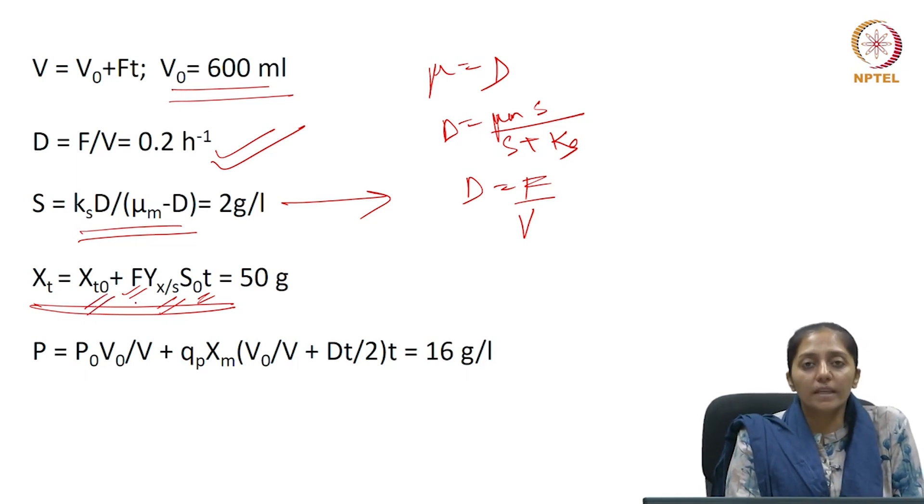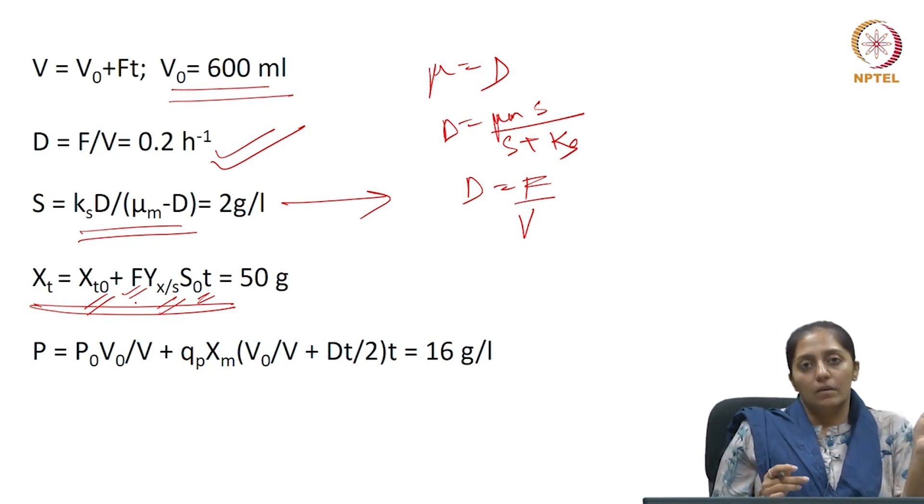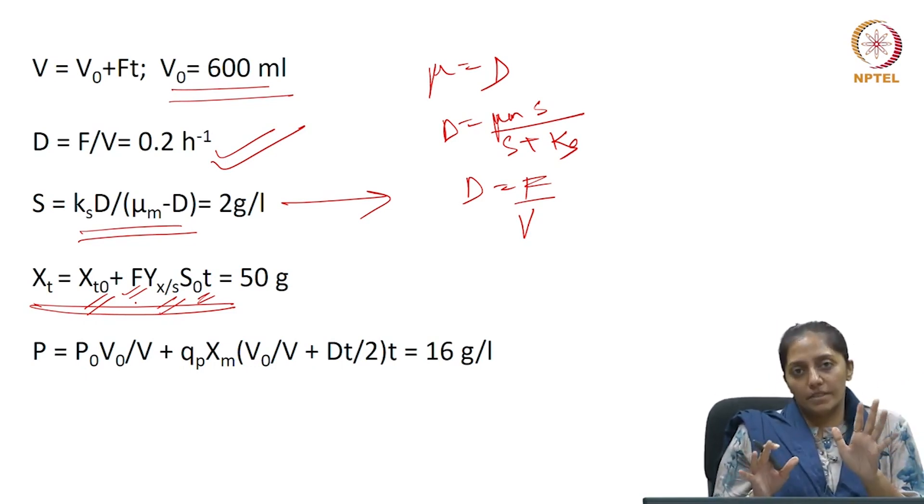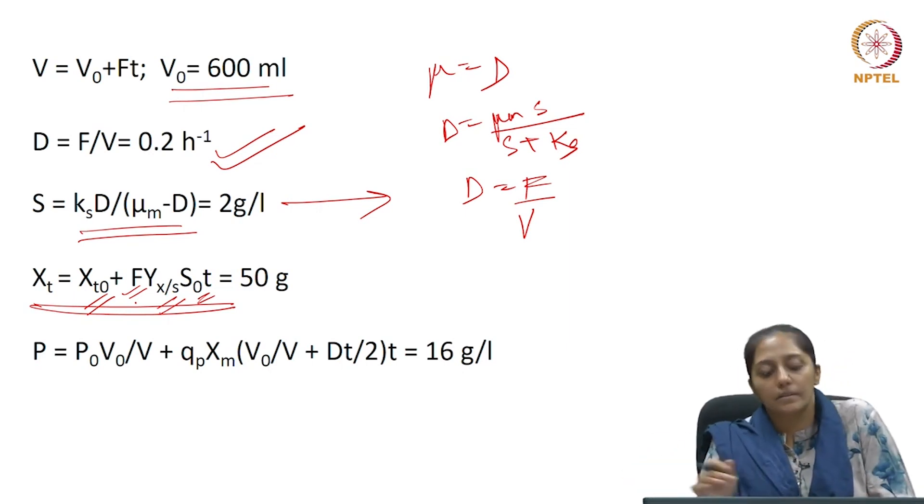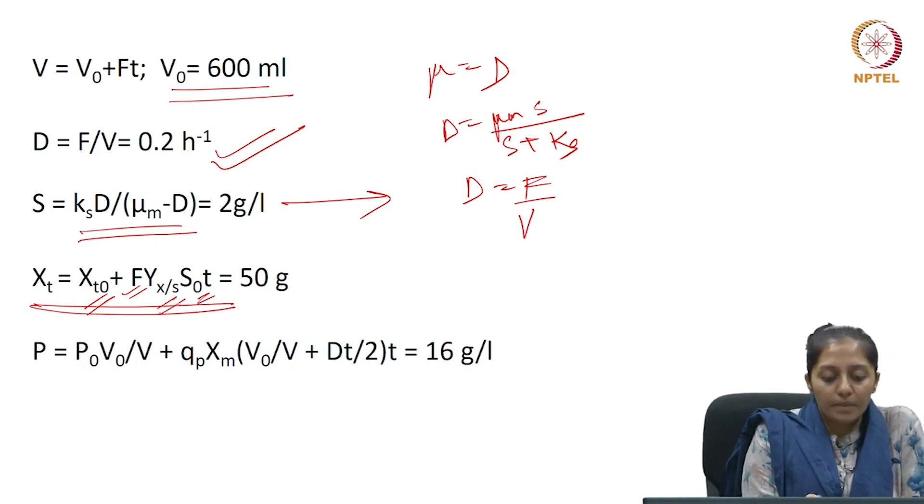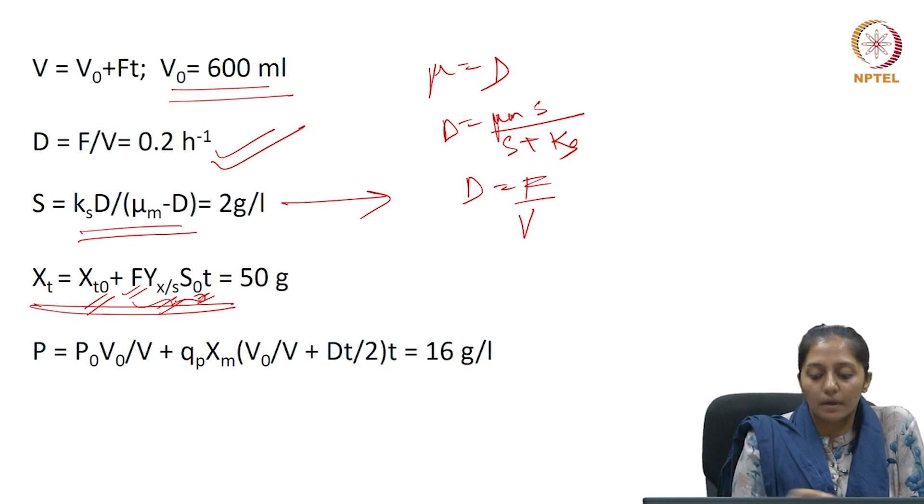This is assuming that almost all the substrate which is coming in is getting utilized. So, whatever is coming in once the quasi-steady state started is getting utilized.